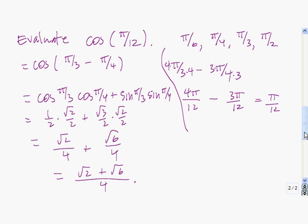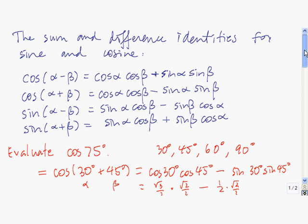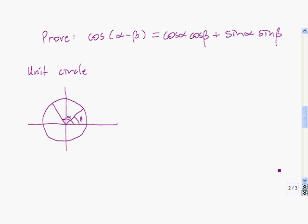Now let's prove the very first identity, which is the difference identity for cosine. So let's start with this unit circle here. We draw the angle alpha there and the angle beta there.